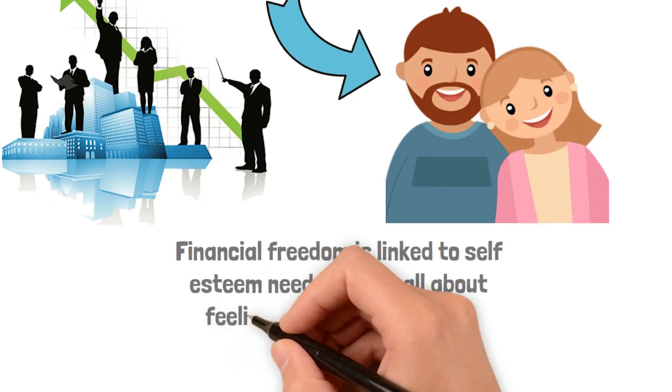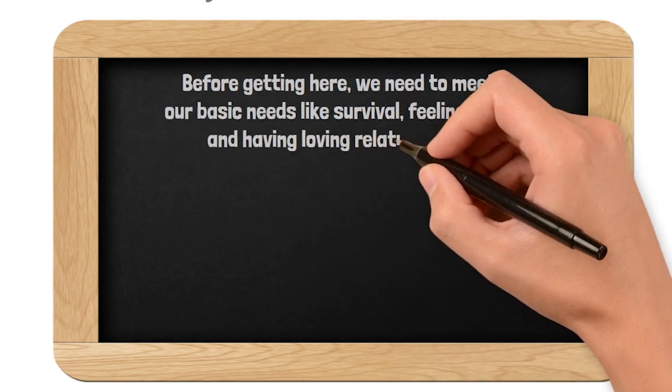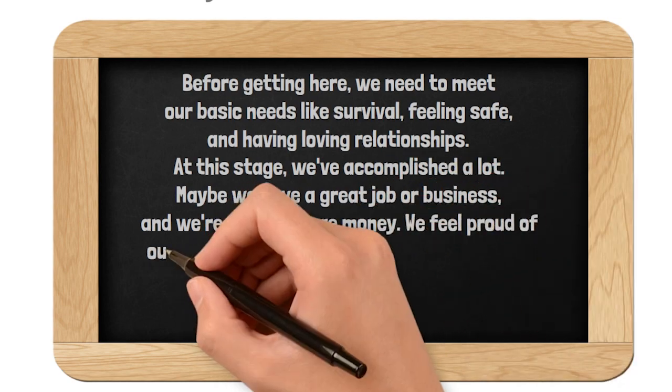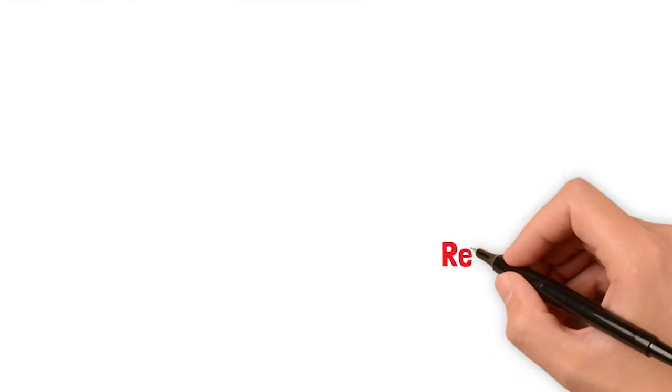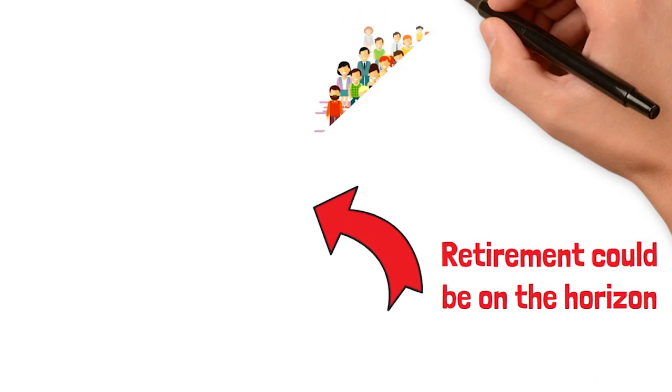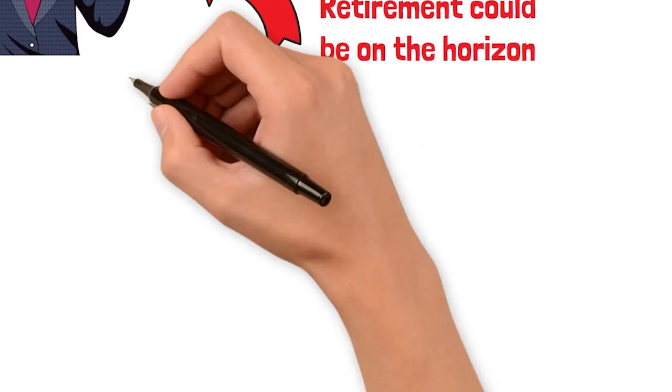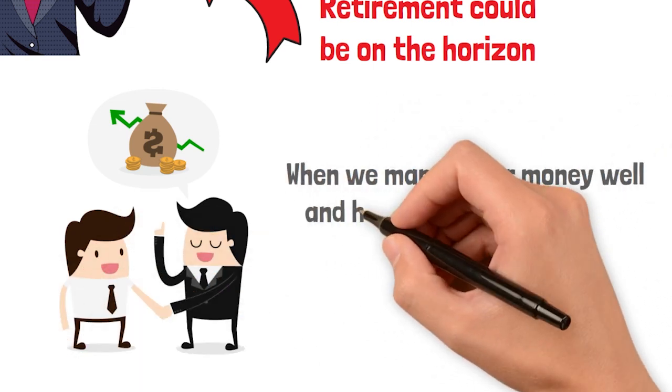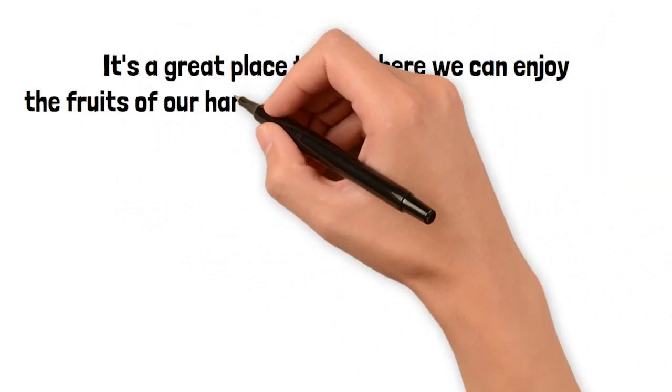Financial freedom is linked to self-esteem need, which is all about feeling good about yourself and what you've achieved. Before getting here, we need to meet our basic needs like survival, feeling safe, and having loving relationships. At this stage, we've accomplished a lot. Maybe we have a great job or business, and we're earning more money. We feel proud of our abilities and what we've achieved, getting recognition and respect from others. People might even look up to us for our success. Retirement could be on the horizon, and we're managing our wealth for the next phase of life. We feel accepted in society and our community, and our social status reflects our accomplishments and financial situation. This is where financial freedom can kick in. When we manage our money well and have accomplished a lot, we feel more confident and secure. It's a great place to be, where we can enjoy the fruits of our hard work and feel good about ourselves.